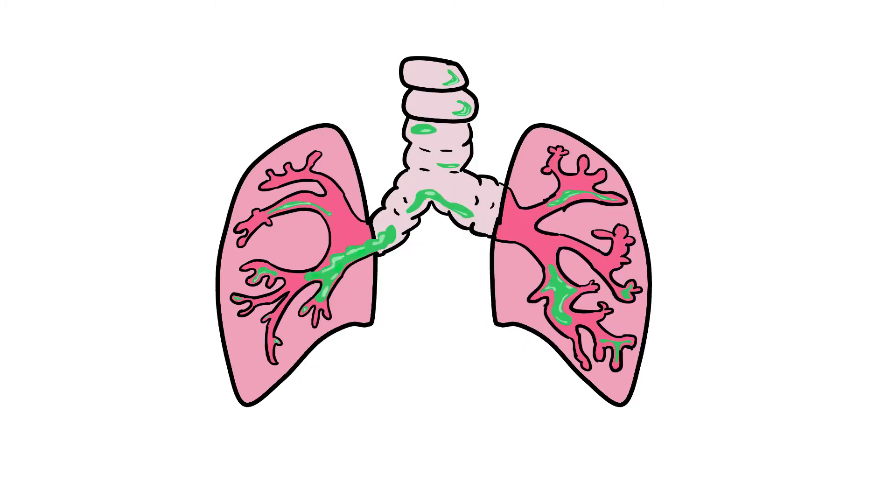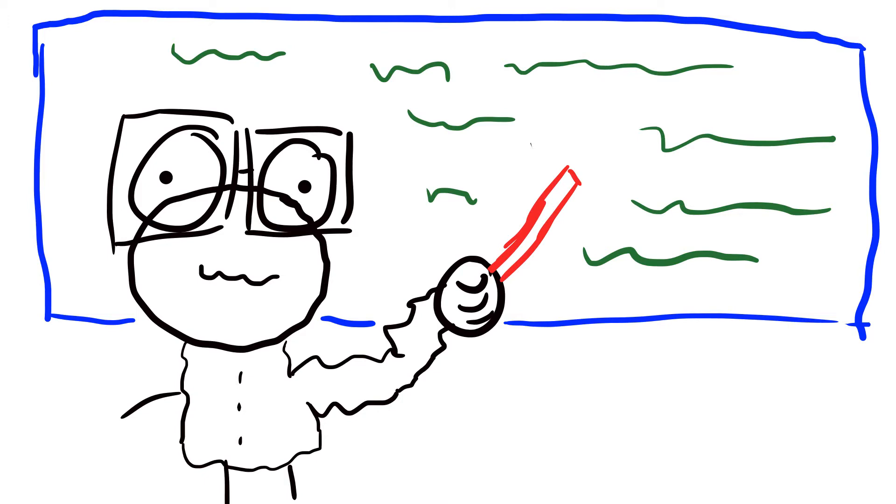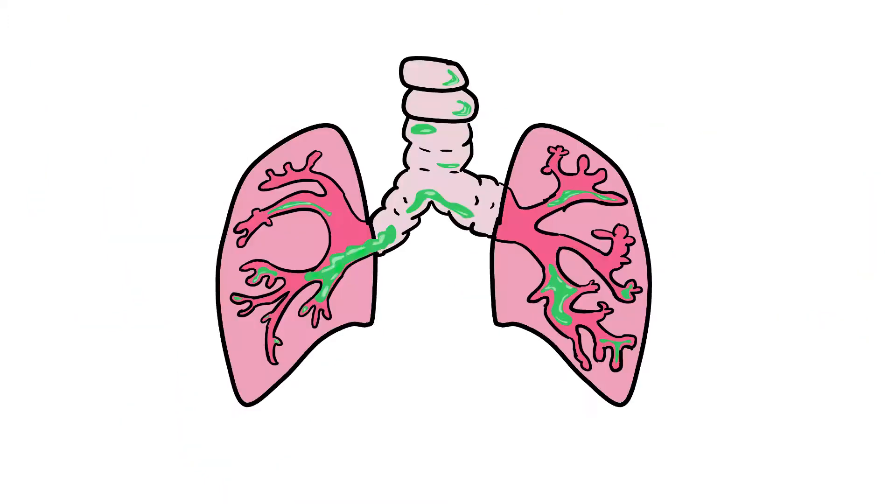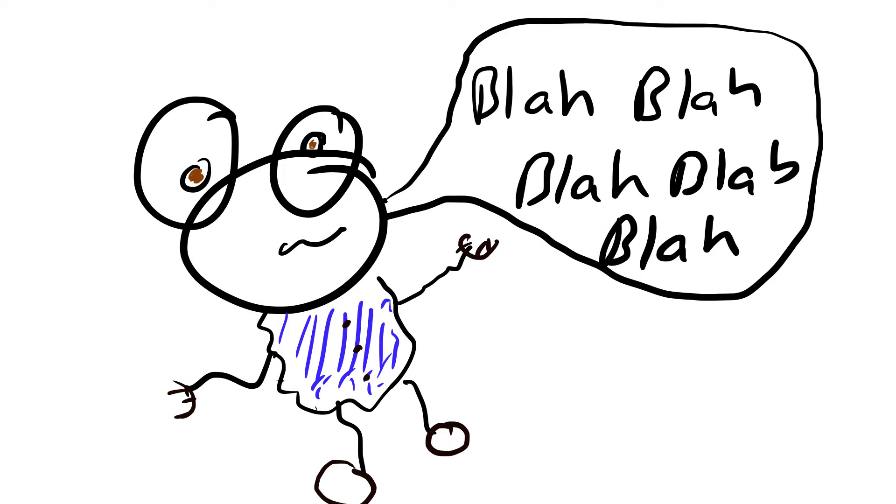So on physical exam, we can hear crackles and decreased breath sounds on auscultation, as well as dull thuds when we tap the chest. So dullness to percussion, which just means that there's fluid in the lungs. Also during auscultation, we can ask the patient to say E and it will sound like they're saying A. This is known as egophony.